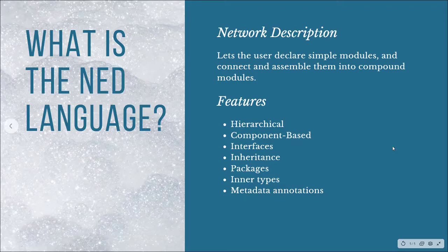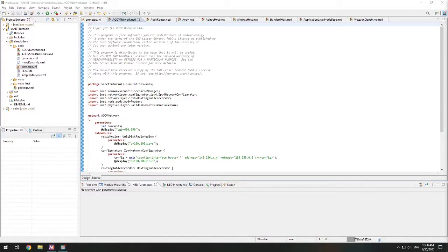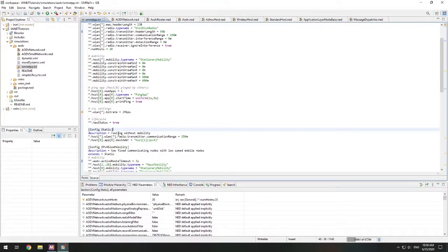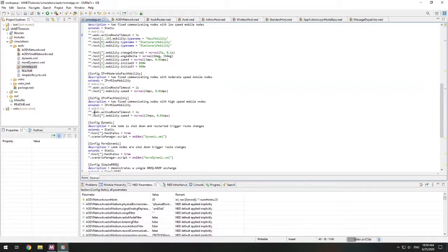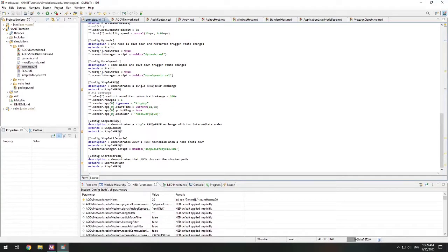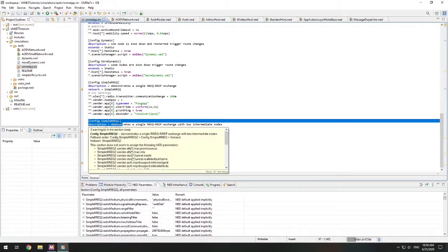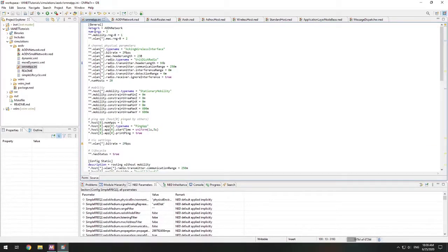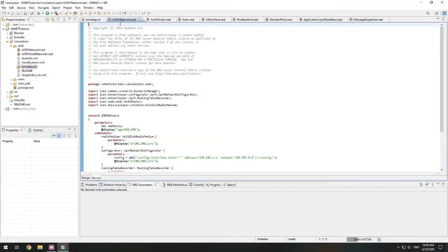We reviewed OMNeT++ and the NED language. Let's now look at a working example. Let's look at our AODV example. In here, I have already opened the AODV network.ned. This defines our network. In the OMNeT++ INI file, we are actually setting our network to AODV network. This is for the general option. Remember that you can have different configurations within OMNeT++ in your INI file. If you scroll down to some of our AODV examples, we actually change the network. For example, in the config simple RREQ2, it changed the network to simple RREQ2. So it can be changed, but right now in general it's set to AODV network.